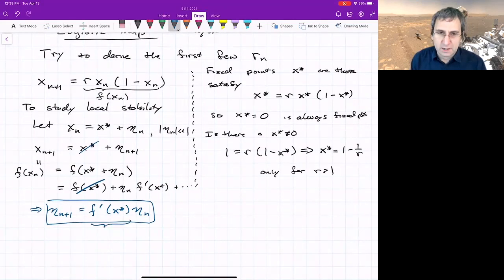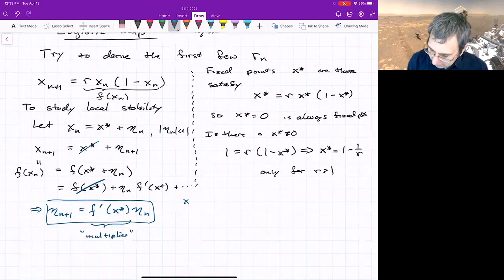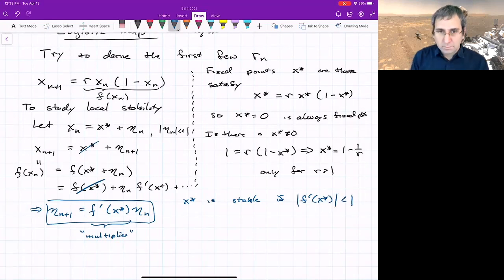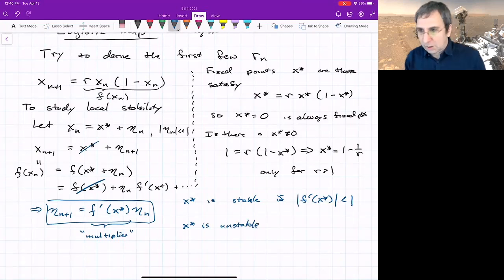This would be the multiplier. x* is stable if the magnitude is less than 1. If it's negative 0.9, that means around that fixed point it's shrinking by a factor of 0.9 and jumping back and forth. Just like with one-dimensional ODEs, all we have is stable and unstable, and maybe critical points if this modulus exactly equals 1. If that slope is greater than 1, it's unstable because things are moving away.